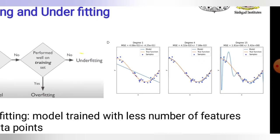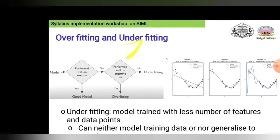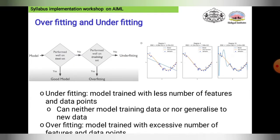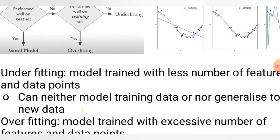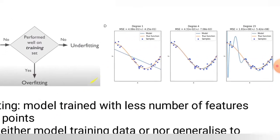From the PPT: underfitting is when the model is trained with a less number of features and data points — it can neither model the training data nor generalize to new data. Overfitting is when the model is trained with an excessive number of features and data points, and the model gets trained on redundant data and unwanted noise.